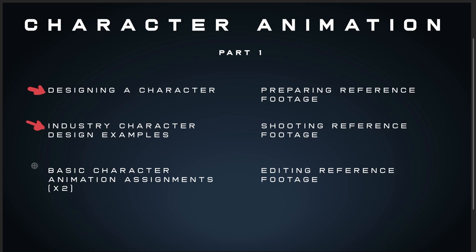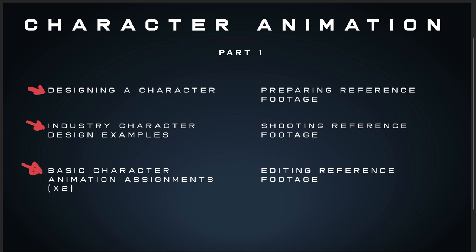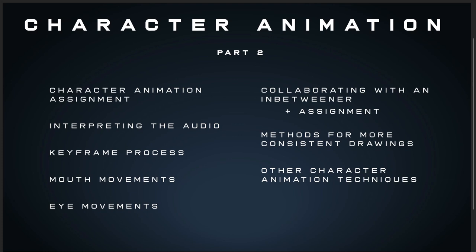We have basic character animation assignments to prepare you for what's to come. Then I show my entire process of shooting reference footage for a short film idea — bringing that footage back into the edit, choosing the best references, selecting the keyframes, and synchronizing it with audio, because this is character animation where the characters are talking. Part two gets into the nitty-gritty: mouth movements, eye movements, the keyframe process, and interpreting the audio before we even get into the drawing.